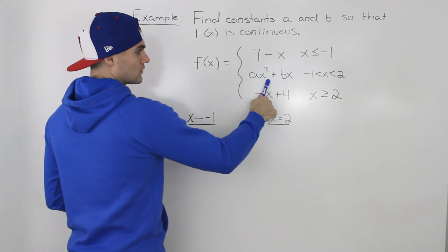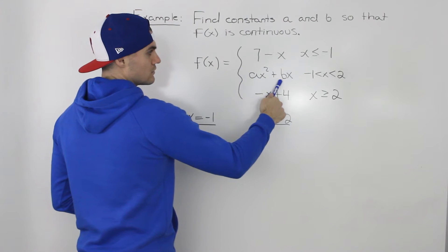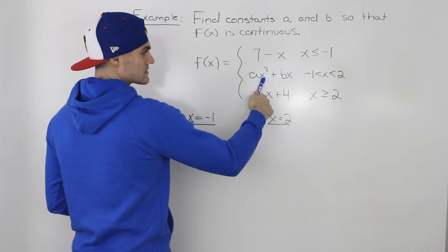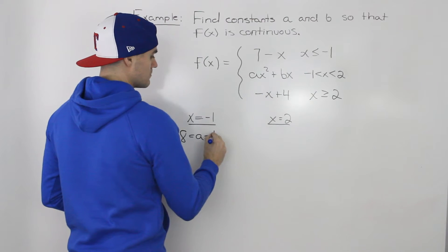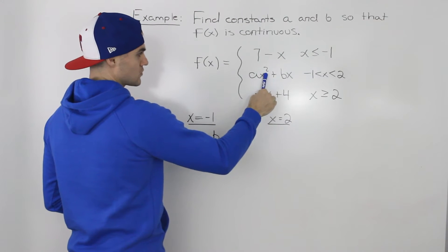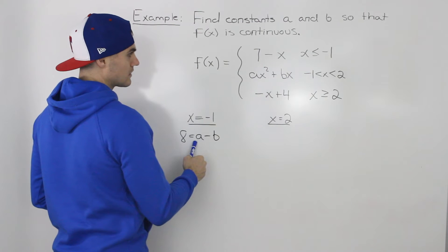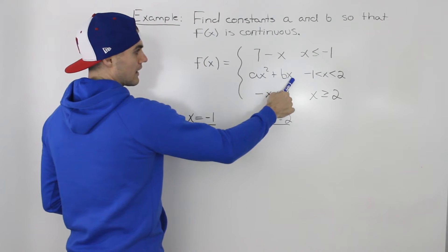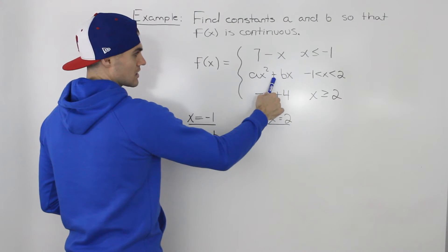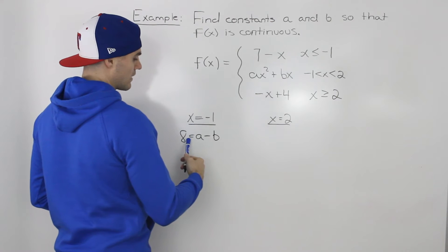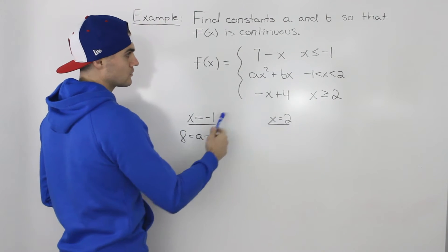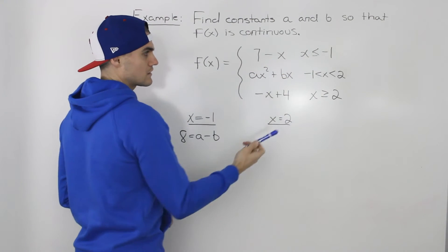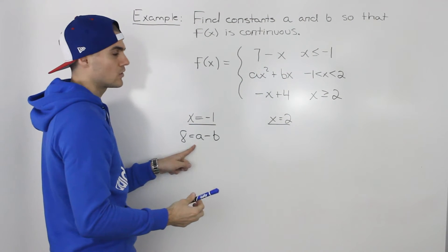The y value for this piece, if we plug in negative 1 for x, is going to be a minus b. Because negative 1 squared is 1, so it's like 1a. And then an x value of negative 1 will change this positive into a negative. So we'll have 8 equals a minus b. Basically, the y values of these two pieces at x equals negative 1 have to equal.